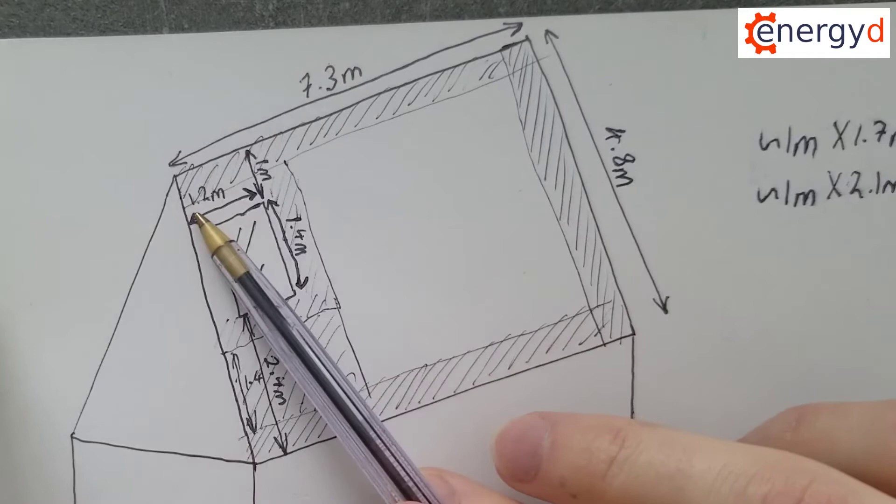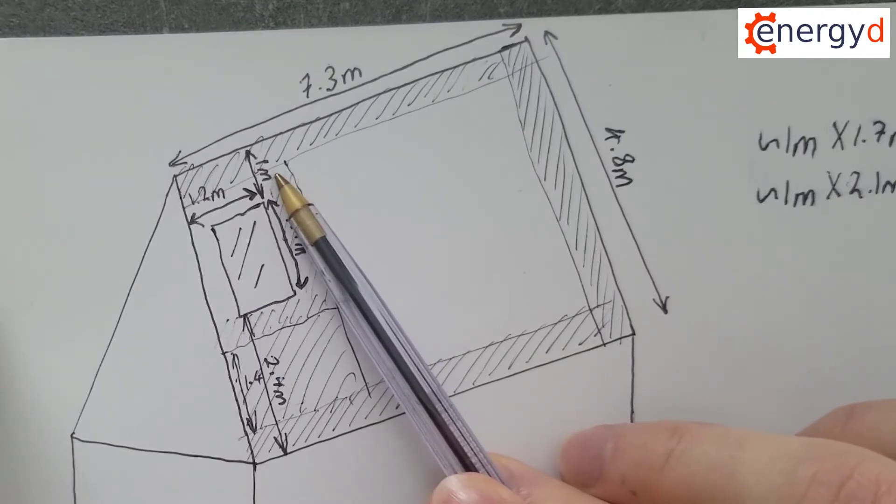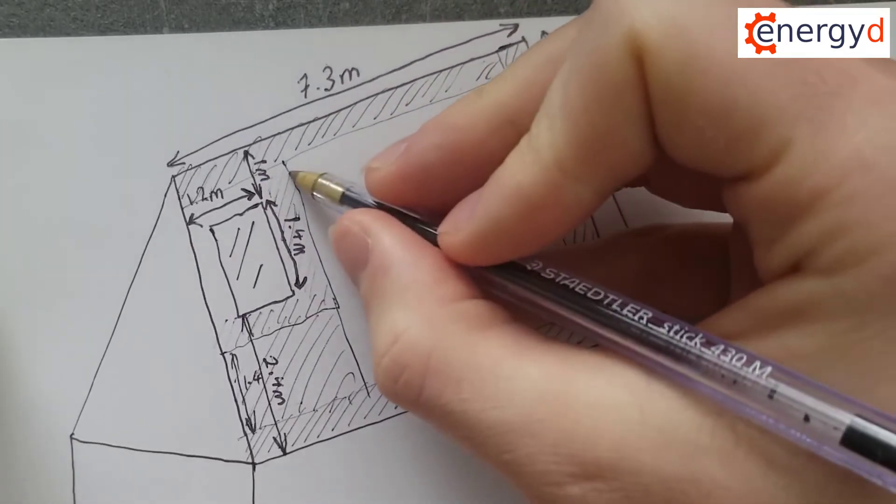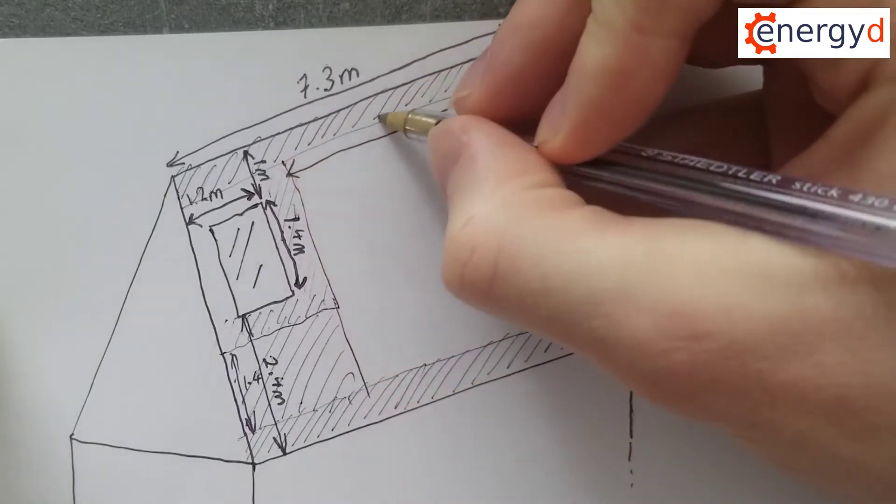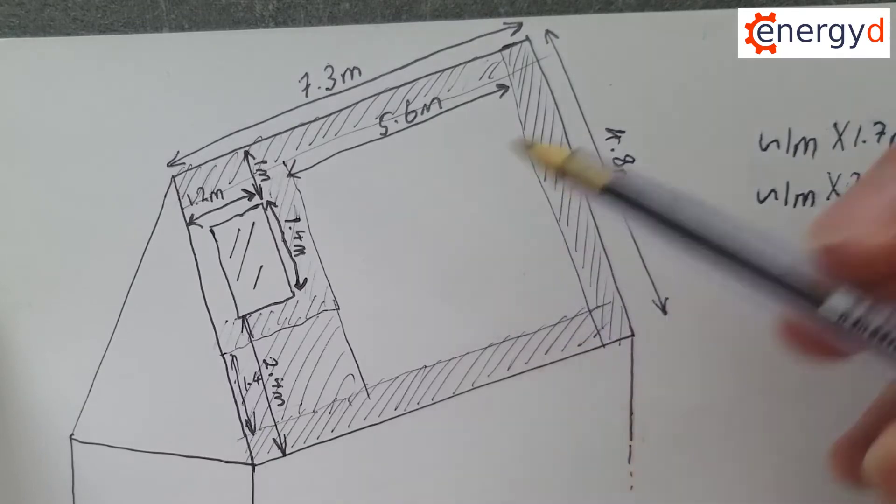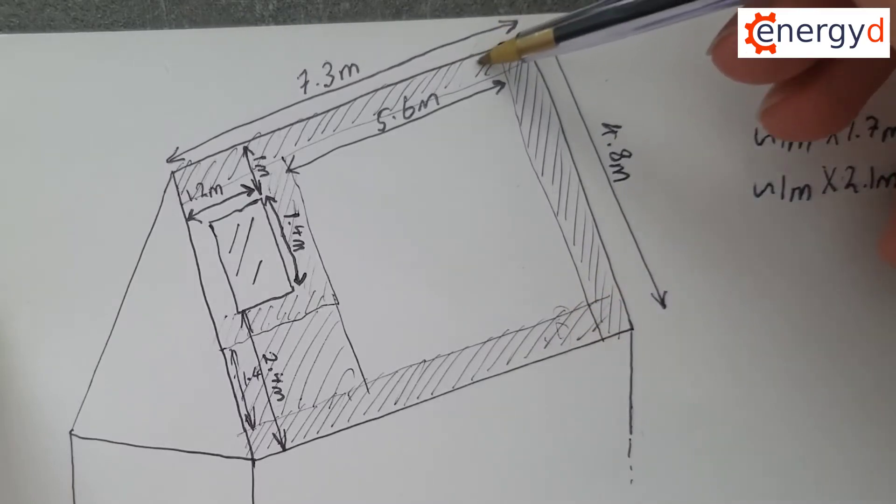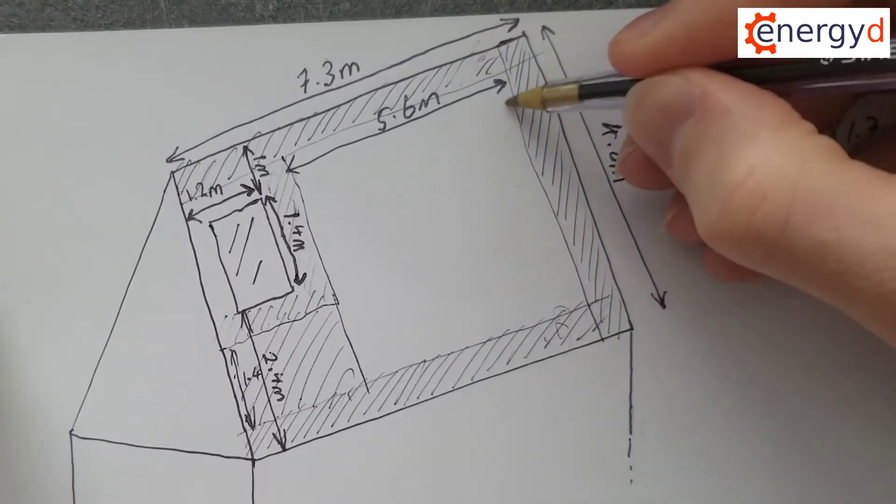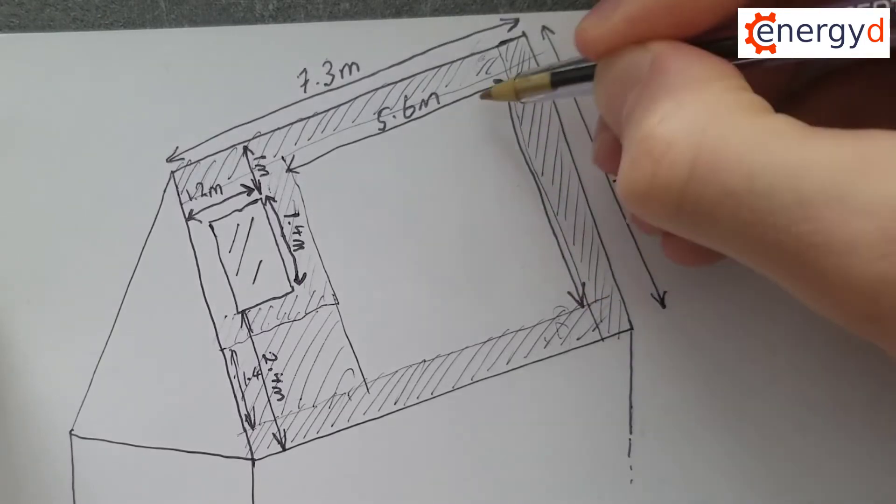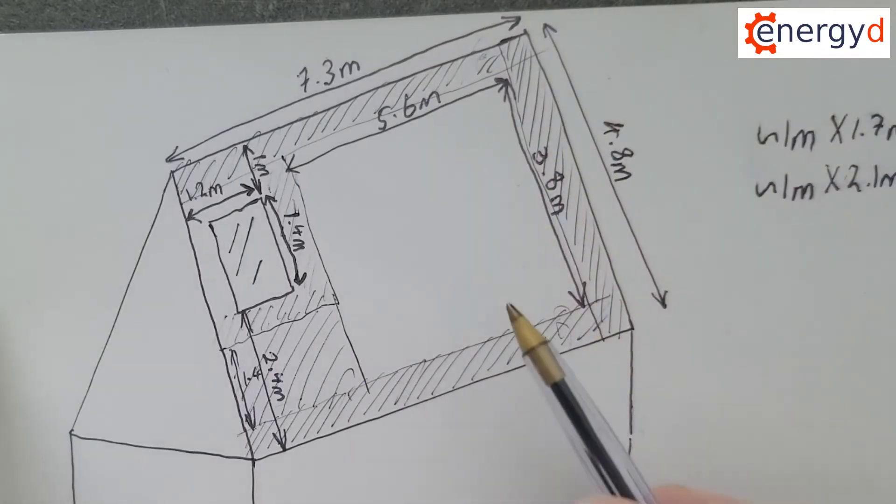So 7.3 meters minus 1.2 minus 0.5, that's going to be 5.6 meters here. 4.8 minus 0.5 here minus 0.5 here leaves us with 3.8 meters here.